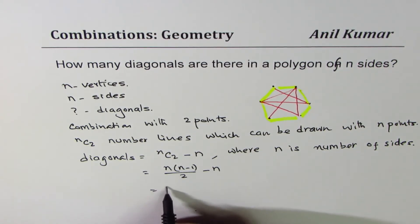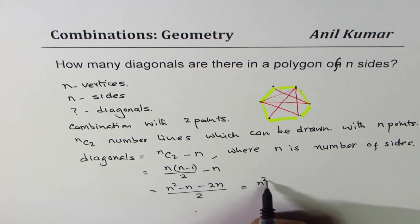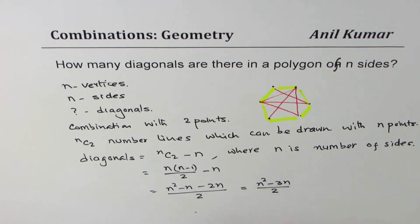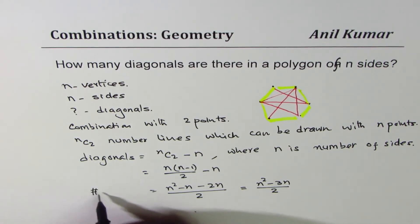If I open the bracket, we get n square minus n. Multiply this, so we get minus 2n, taking common denominator of 2. So that gives us n square minus 3n divided by 2. That becomes a general formula to find number of diagonals.